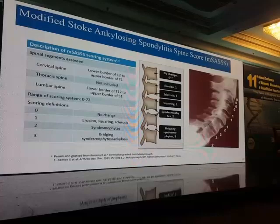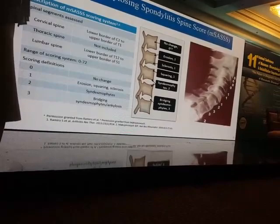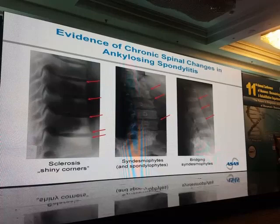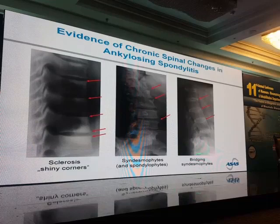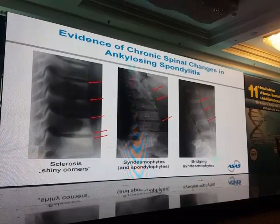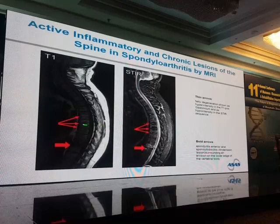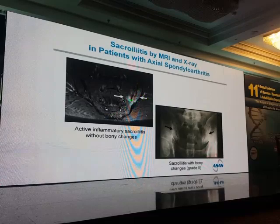The mSASSS score is a grading score that can be applied to the cervical and lumbar spine using a side view plain X-ray. Plain X-ray reveals the chronicity of the disease: early showing only a shiny corner, then the occurrence of syndesmophytes that become bridging osteophytes with bony ankylosis. MRI reflects disease activity through bone marrow edema, and similarly on the sacroiliac joint showing bone marrow edema and destructive changes.